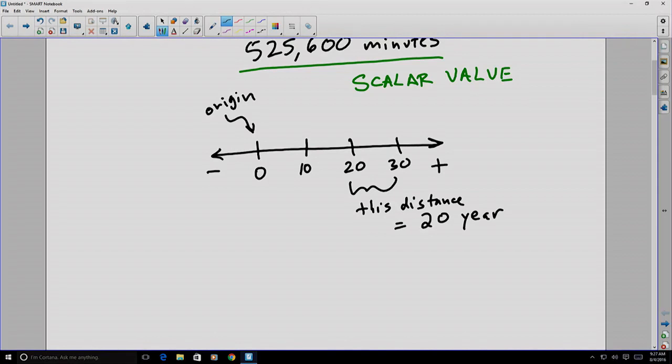For example, the distance between two tick marks on this number line represents, not 20 years, represents 10 years. The distance between two tick marks would represent 20 years. Once you have a number line, any scalar value using the same units can then be represented with a location on the number line.